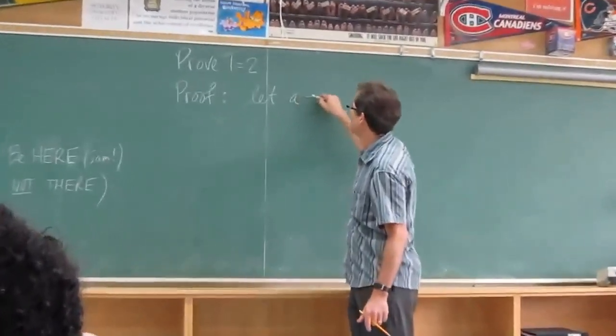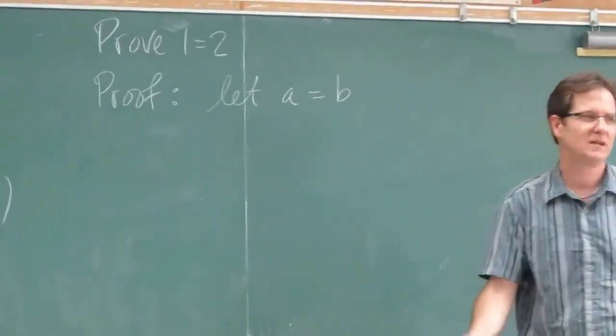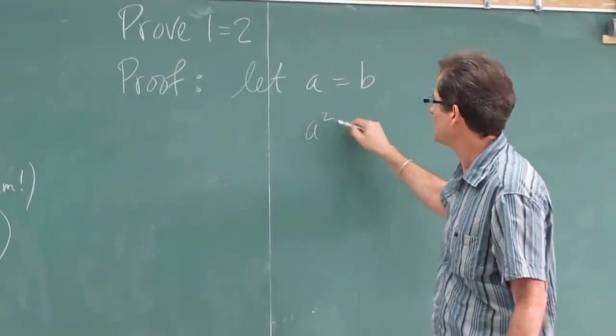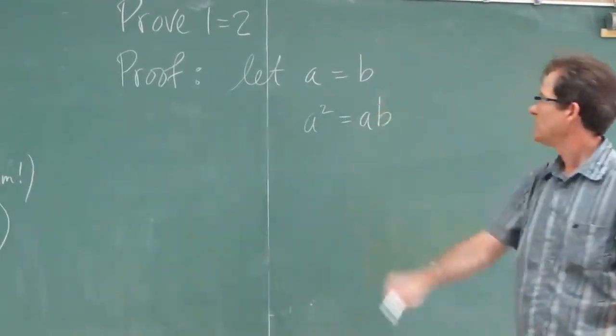Let, for example, A equals B. Whatever A is, B is the same. Then multiply both sides by A. You get A squared equals AB.